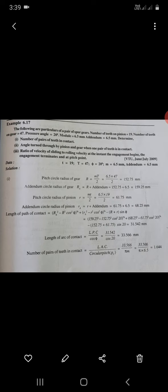The module is 6.5 and the addendum is 6.5 mm. Determine the number of pairs of teeth in contact, angle turned through the pinion and gear when one pair is in contact, and the ratio of velocity sliding to rolling velocity. So given data: small t is 19, capital T is 47, phi is 20 degrees, m is 6.5, addendum is 6.5 mm.